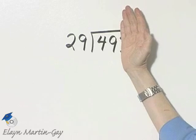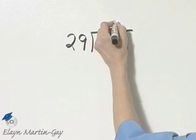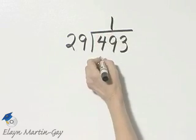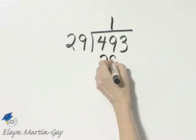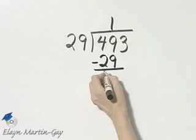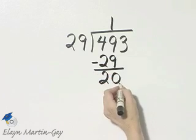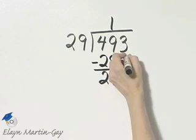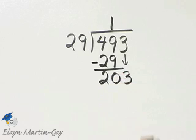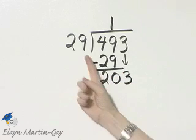29 goes into 49 one time. 1 times 29 is 29. And then I subtract — difference of 20. Bring down the 3. Now how many 29s in 203?